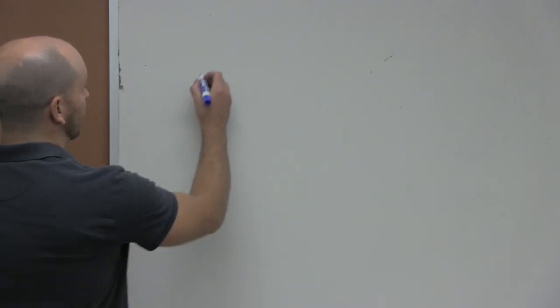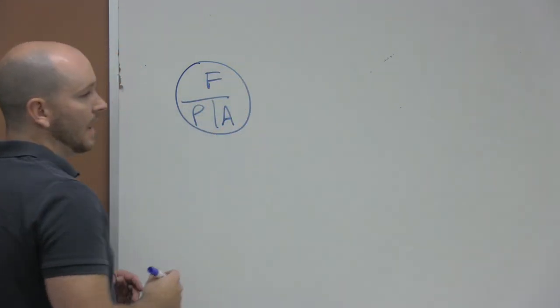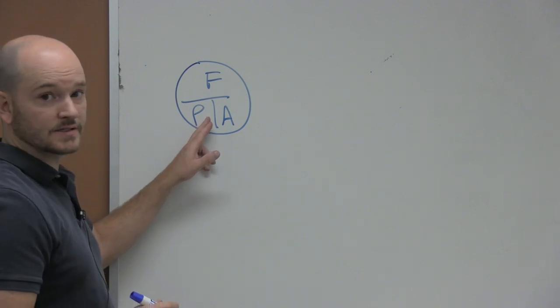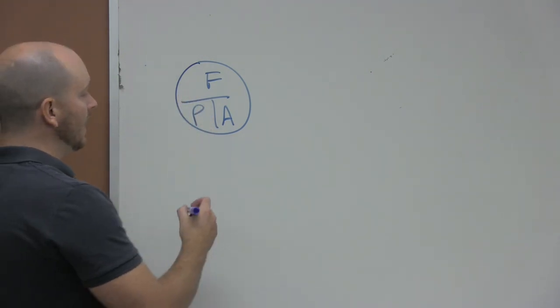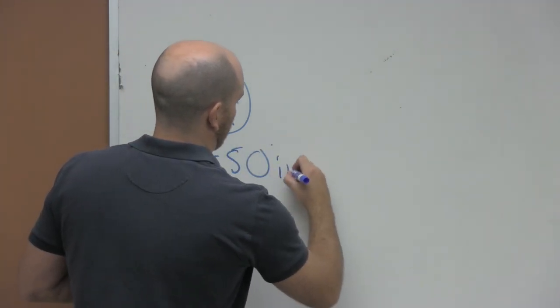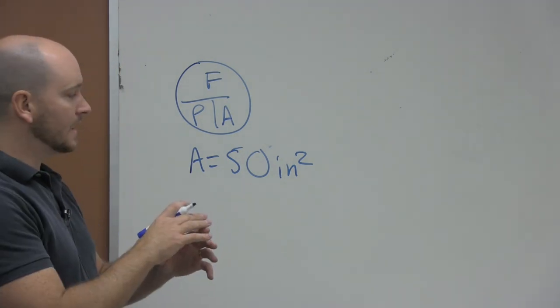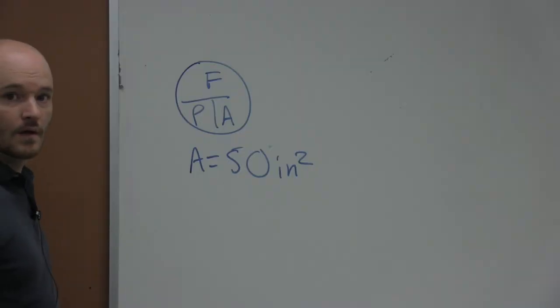Now let's reverse that and look at it from the standpoint of you've calculated the area you need from your cylinder and you need to calculate what the diameter of the cylinder needs to be. For example, we've taken our fluid power circle F over P times A, and based upon the pressure that's available and the force that we need to move, we have an area need of 50 inches squared. How do I extract the diameter from that?